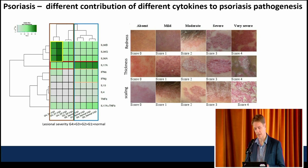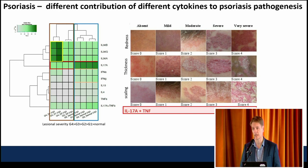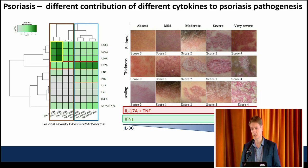Looking at the components we use to score PASI — without the body surface area multiplication factor — IL-17A and TNF are really across the disease as a whole, same with the interferons. But it's really the IL-36 that is driving the disease severity, as you can see.